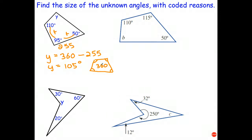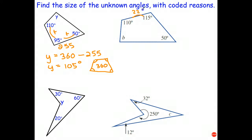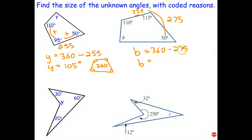Stop the video and try the remaining three questions. Now let's look at the next one. 110 plus 115 gives 225. Adding another 50 gives 275. Therefore, angle B is going to be 360 take away 275. It's easier to add: 275 plus 25 gets to 300, then another 60, so 60 plus 25 is 85 degrees. Coded reason: angles in a quadrilateral add to 360.